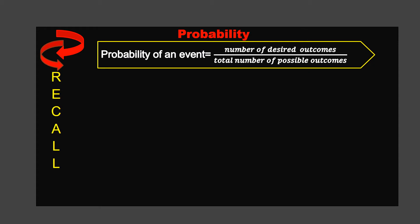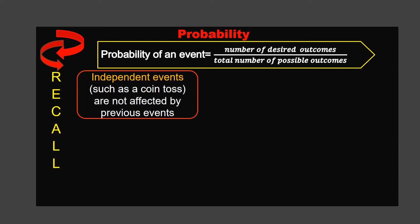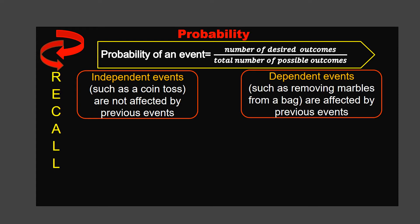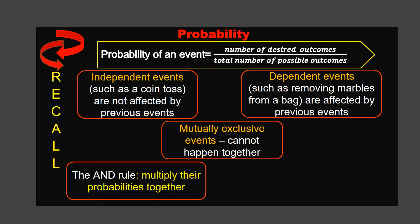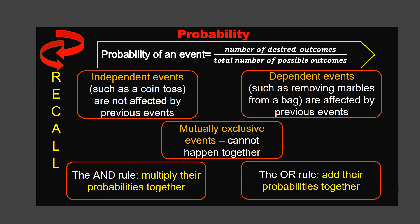When calculating the probability of an event occurring, write the number of desired outcomes over the total number of possible outcomes. Independent events, such as a coin toss, are not affected by previous events. Dependent events, such as removing marbles from a bag, are affected by previous events. Mutually exclusive events — when you flip a coin you might get head or tail; both cannot happen together. Two basic rules in probability: the AND rule — multiply their probabilities together; the OR rule — add their probabilities together.